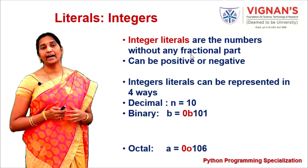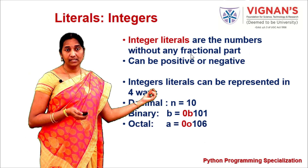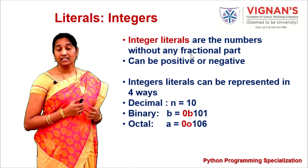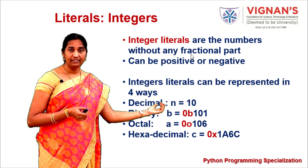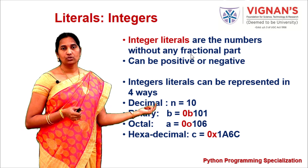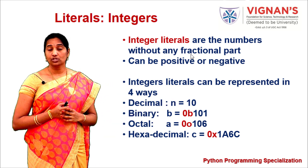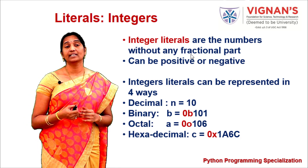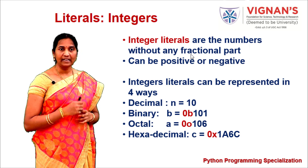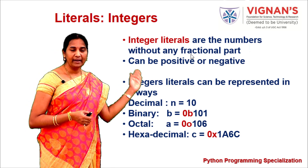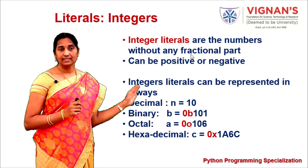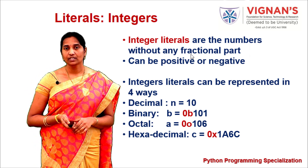Octal numbers are prepended with the symbol 0o, where o stands for octal. Hexadecimal numbers are prepended with 0x, where x stands for hexadecimal. So a decimal number has no prefix, a binary number uses 0b, an octal number uses 0o, and a hexadecimal number uses 0x.